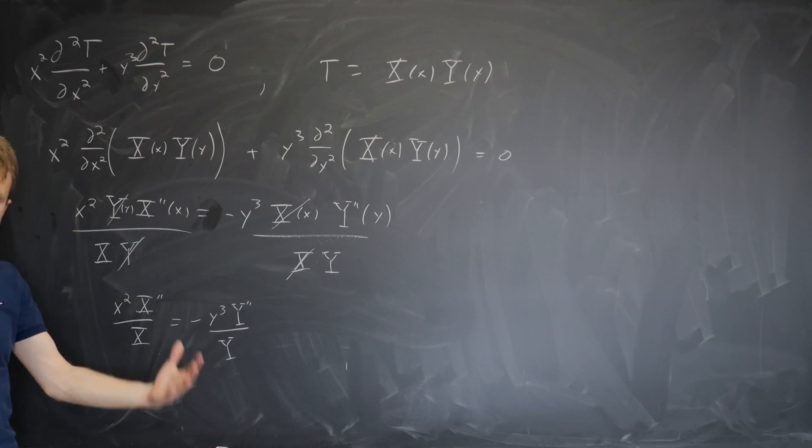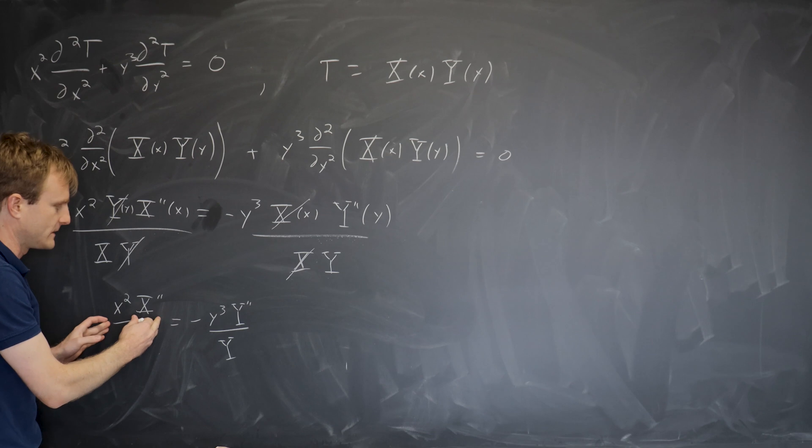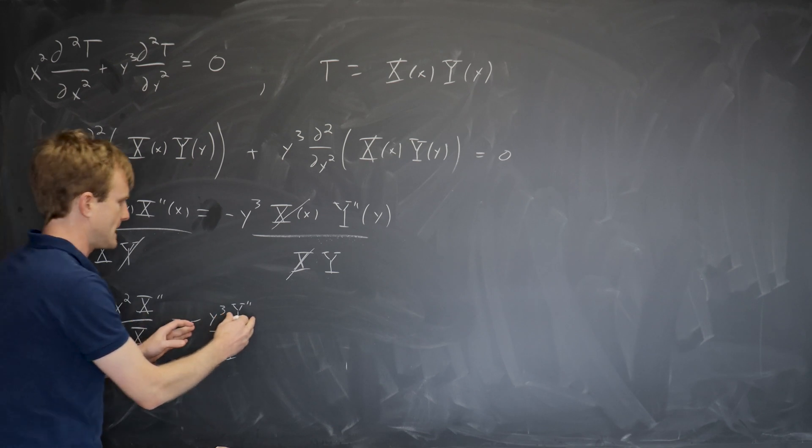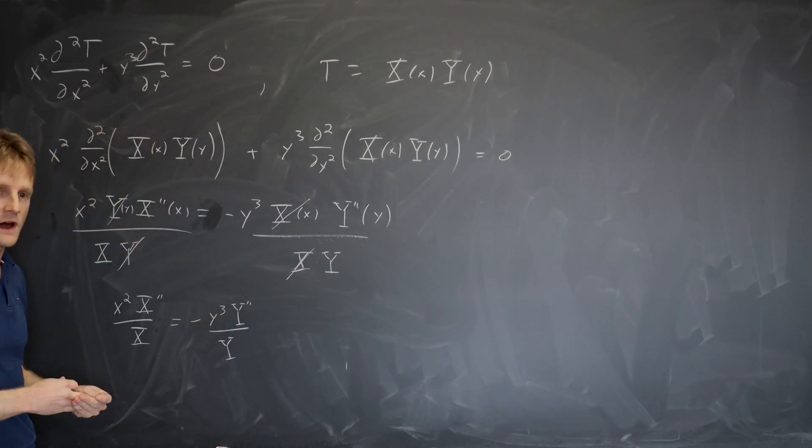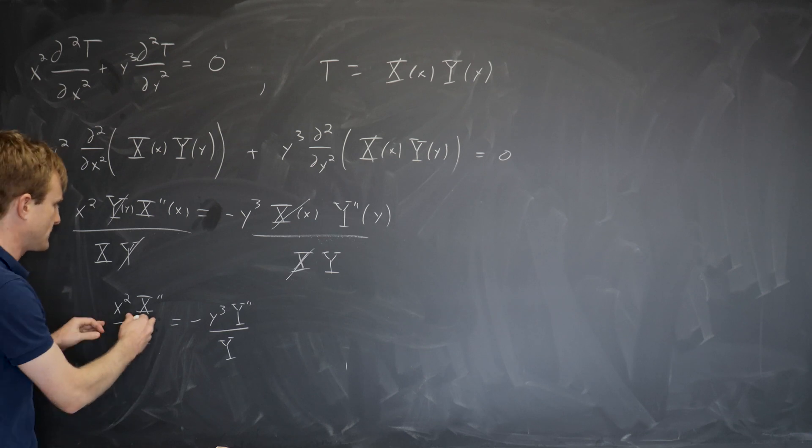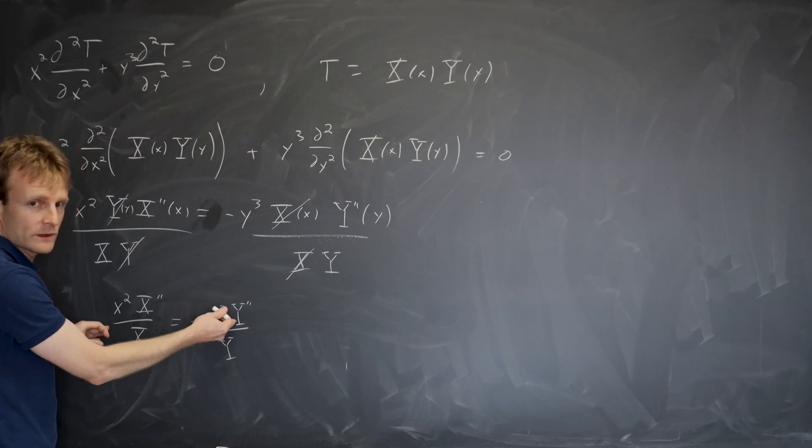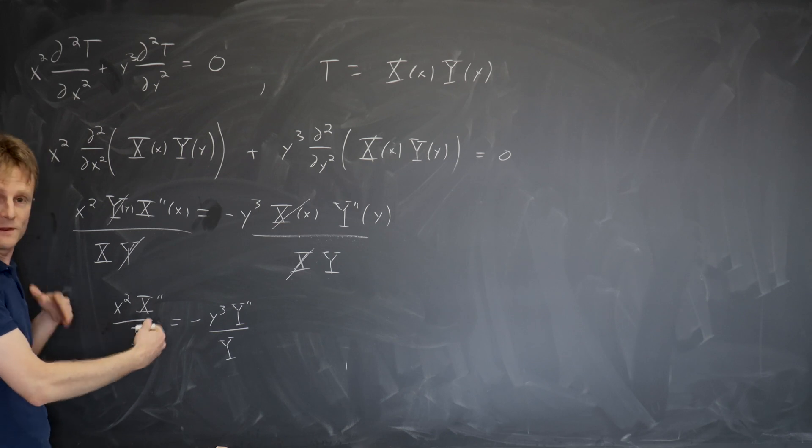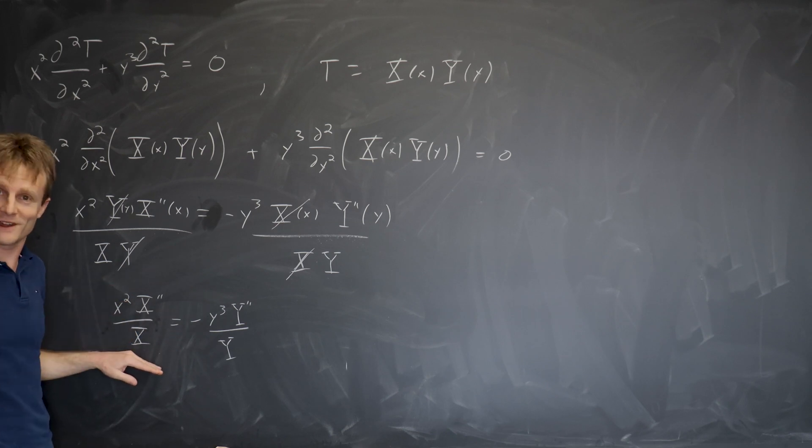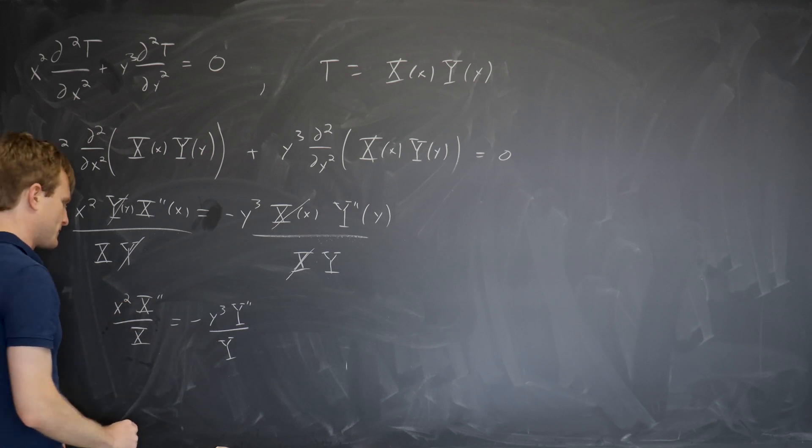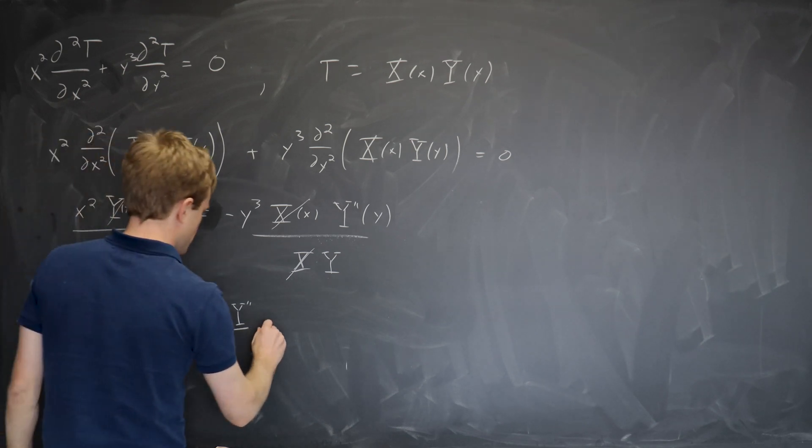And now I can make the same argument I made in the other video that the left hand side depends only on x. The right hand side depends only on y. So this is independent of y, but it's also equal to something that's independent of x. So it's actually independent of x and y. So it's actually constant and likewise for the right hand side. So both sides are constant.